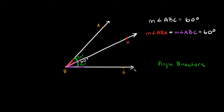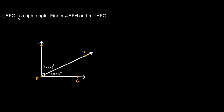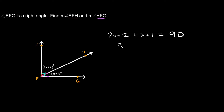Let's jump into the first example. Angle EFG is a right angle, as shown by the right angle symbol. Find the measure of angle EFH and angle HFG. These two angles are complementary, meaning they add up to 90 degrees. So we add their expressions: 2x + 2 plus x + 1 equals 90 degrees. Combining like terms: 2x + x = 3x and 2 + 1 = 3, giving us 3x + 3 = 90.